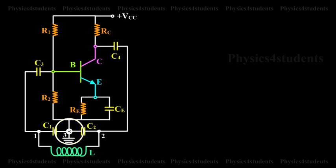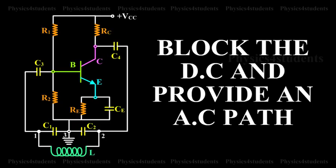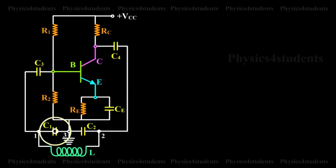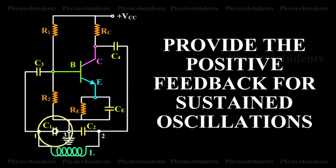The junction of C1 and C2 is earthed. The function of the capacitor C4 is to block DC and provide an AC path from the collector to the tank circuit. The voltage developed across C1 provides the positive feedback for sustained oscillations.